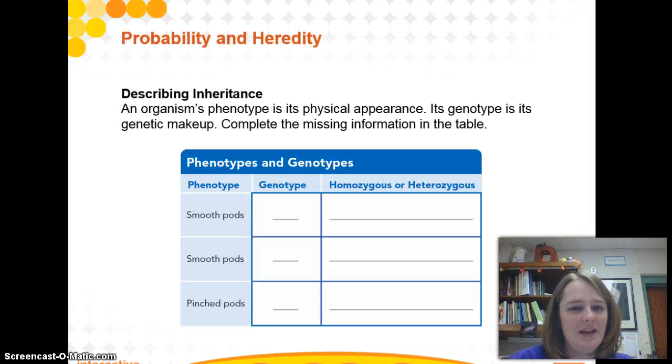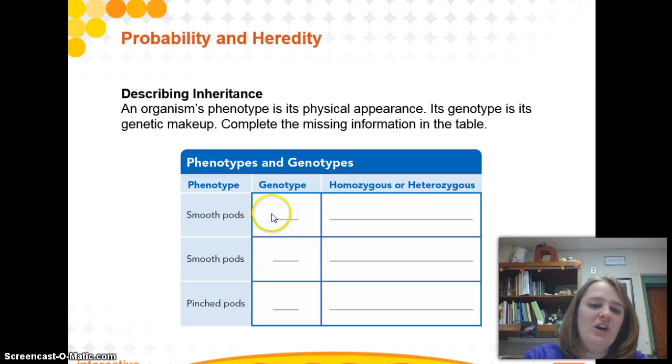So we practiced a little bit inside of your book. If you had smooth peapods and you knew that smooth was the dominant trait, you would be able to say that the genotype could be homozygous dominant or heterozygous. So here we could have big S, big S, homozygous dominant, and then big S, little s, for heterozygous.